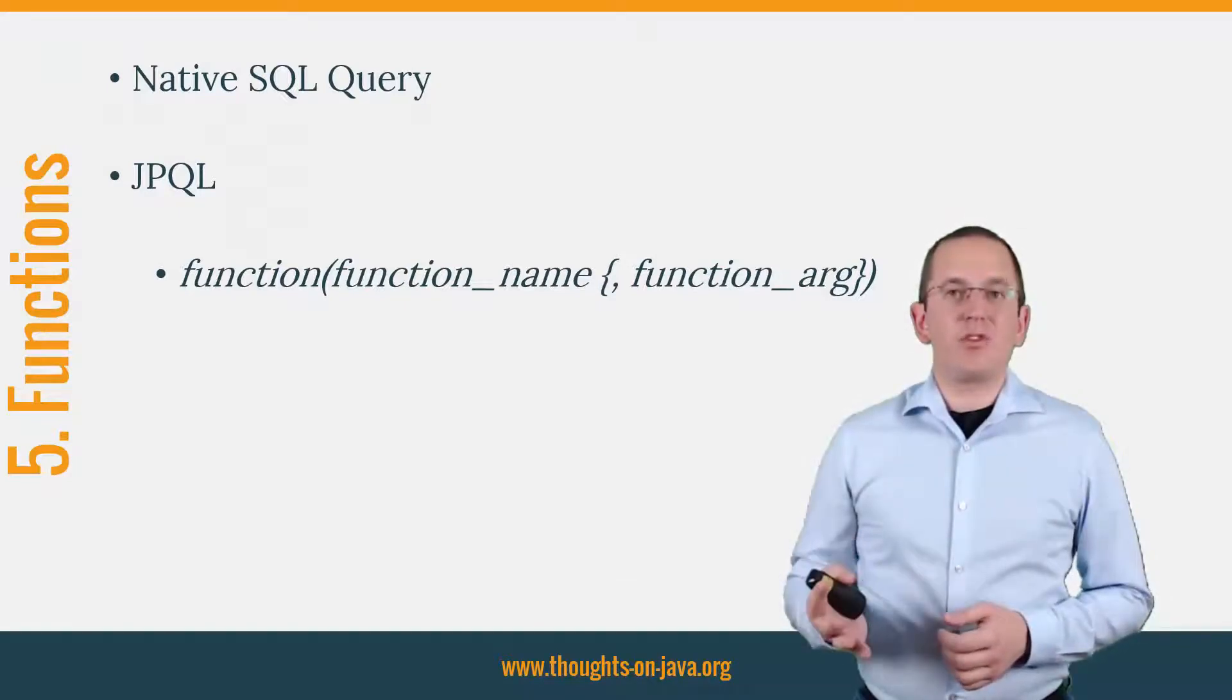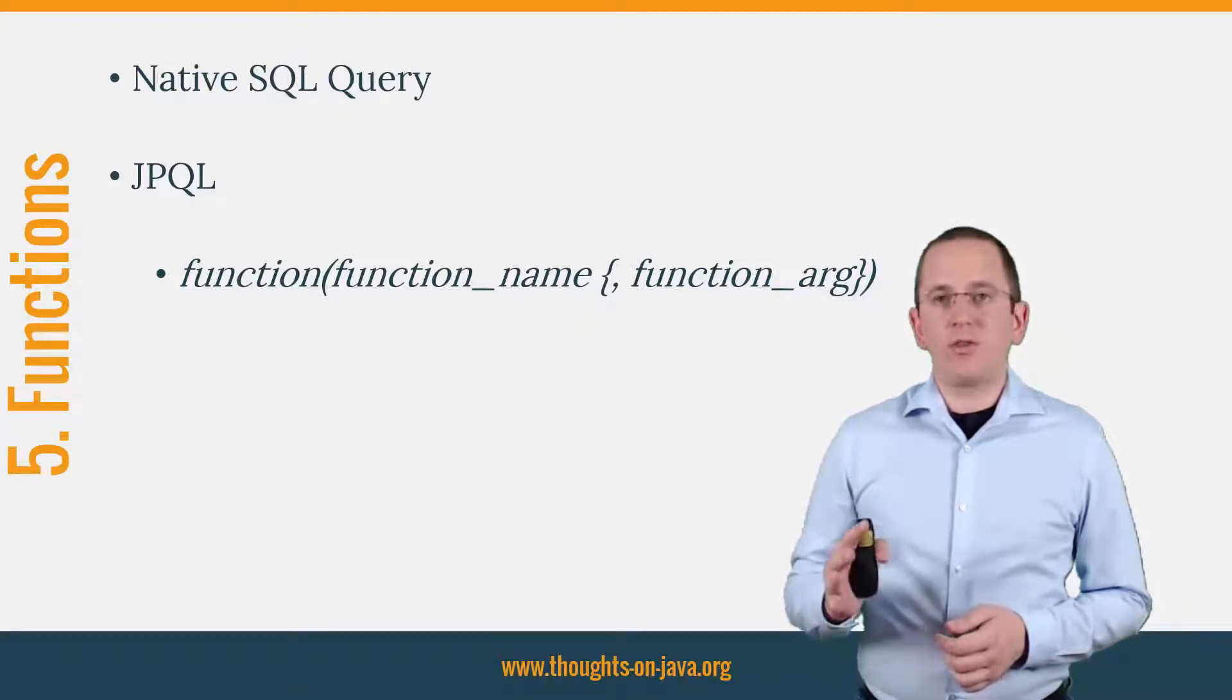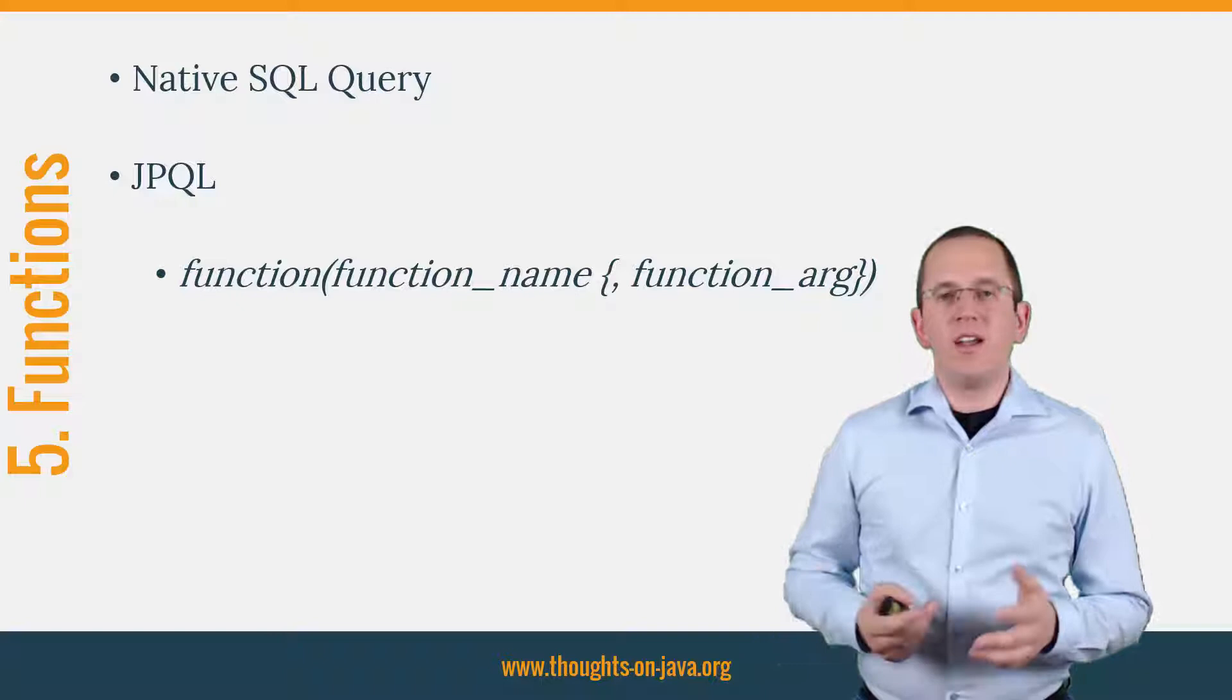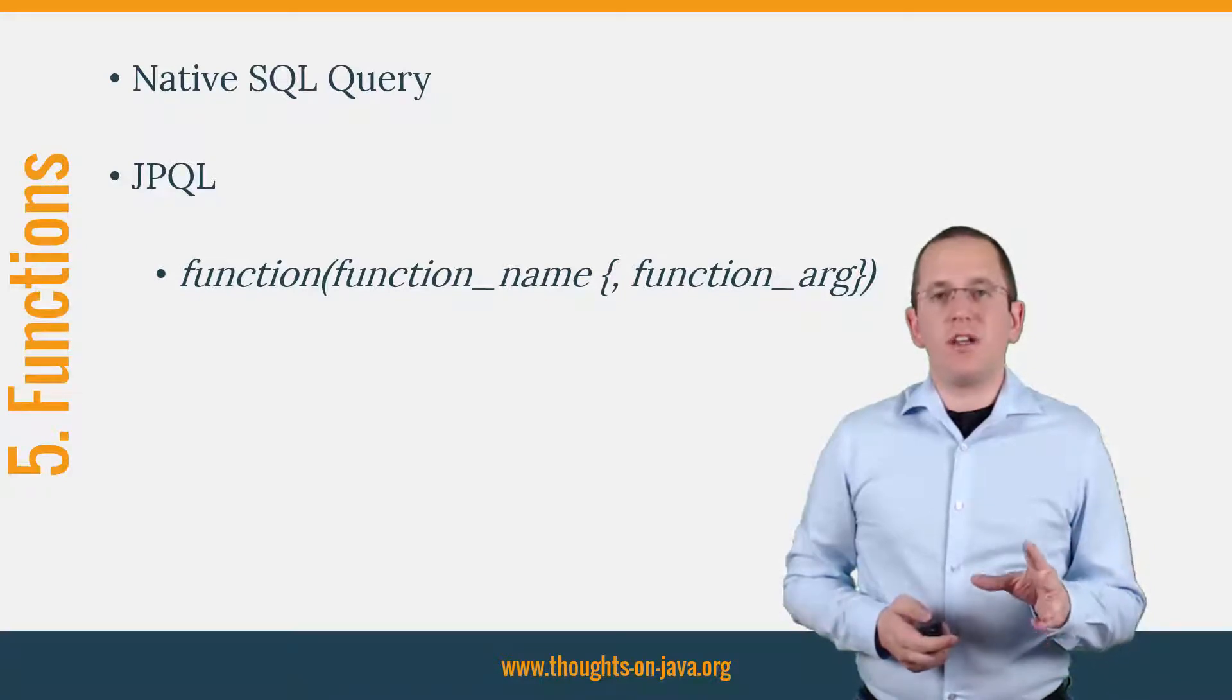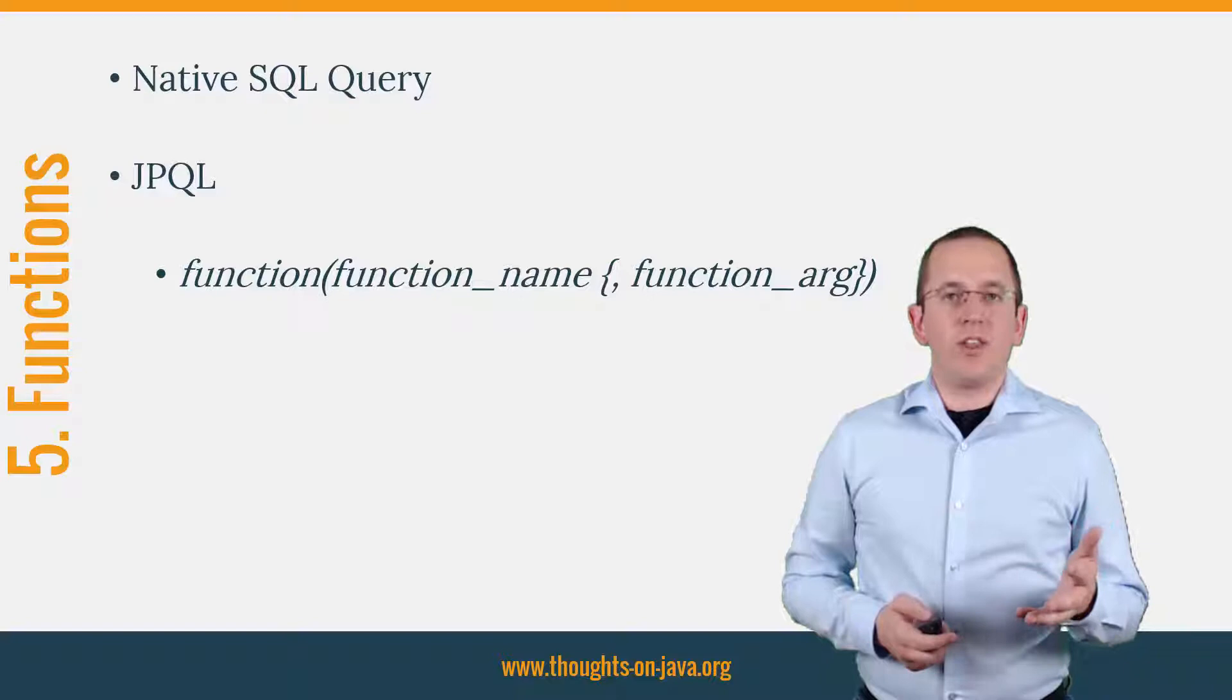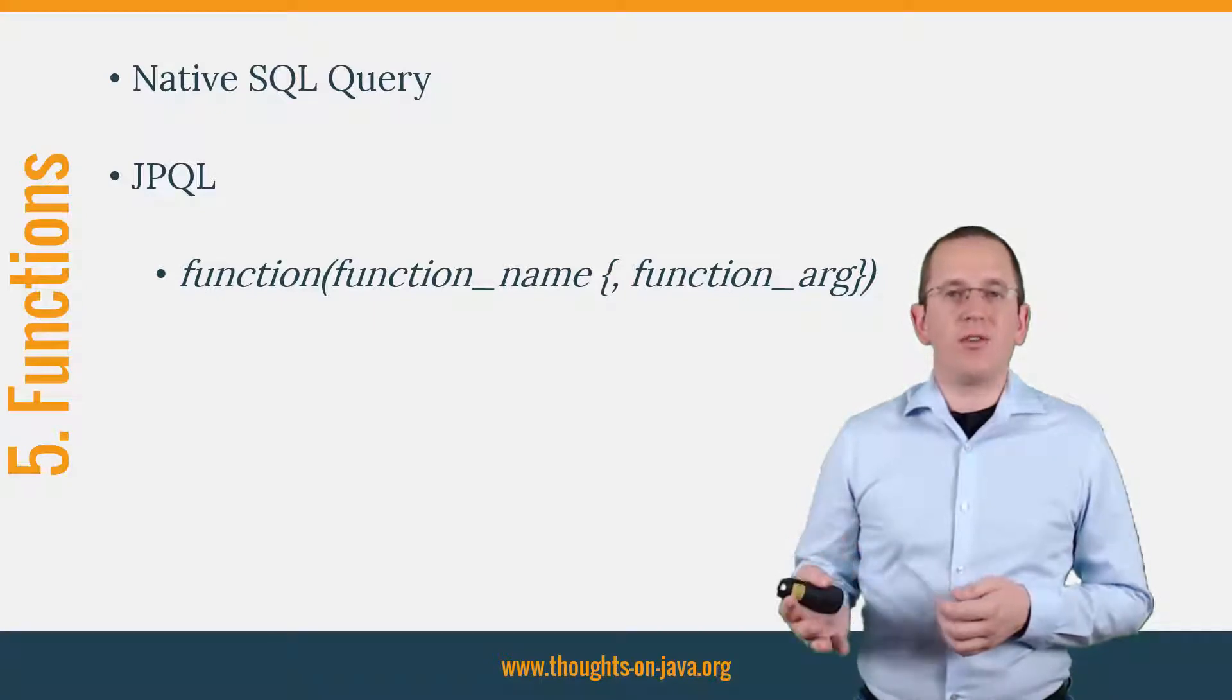5. Call PostgreSQL-Specific Functions. You can, of course, use a native SQL query to call a PostgreSQL-specific SQL function in the same way as you use any other proprietary query feature. But since JPA 2.1, you can also call these functions in your JPQL queries. The JPQL function function allows you to call any SQL functions supported by your database. You just need to provide the name of the function as the first parameter, followed by an optional list of parameters that will be used to call the SQL function.